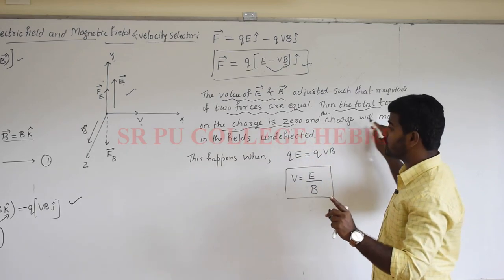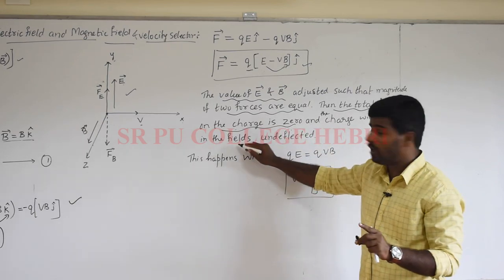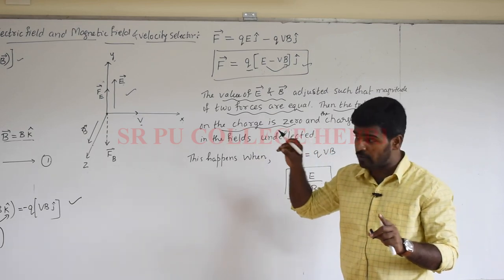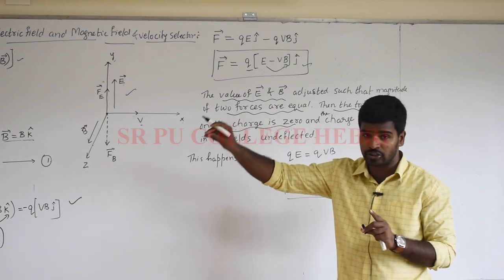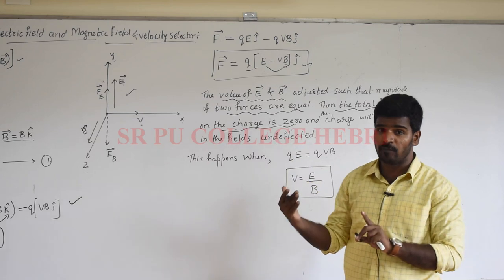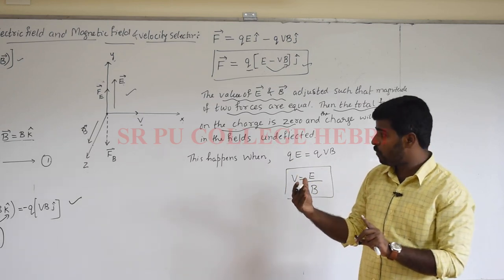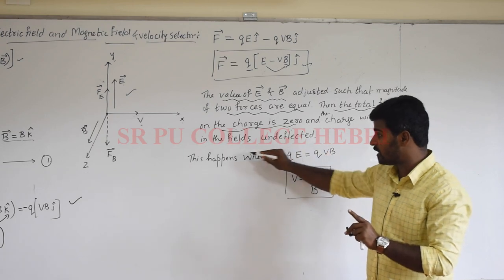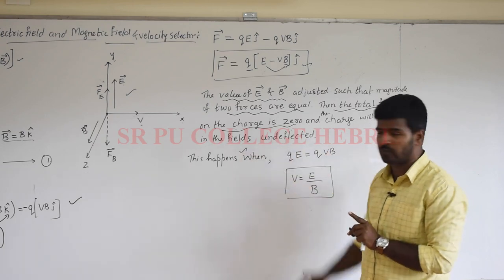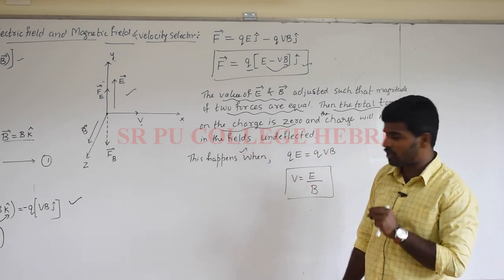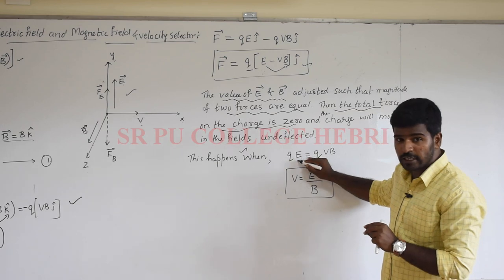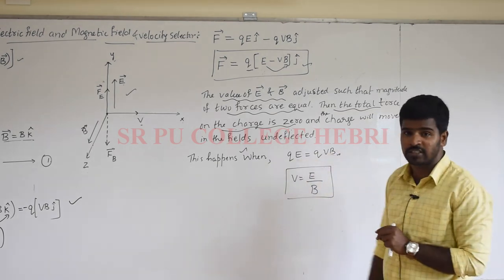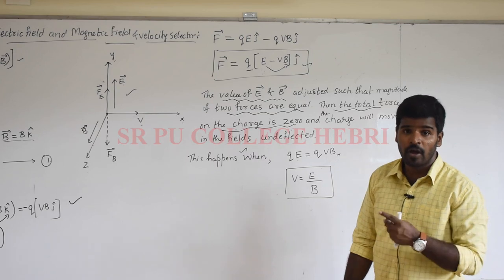When the net force is zero, the charge will move in the field undeflected. This condition happens when the force experienced by the charge in the electric field equals the force experienced by the charge in the magnetic field. According to the equations, F_E = qE and F_B = qvB. When these two forces are equal, the charge will be undeflected in the fields.